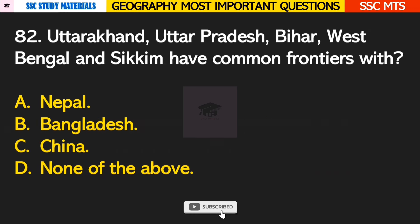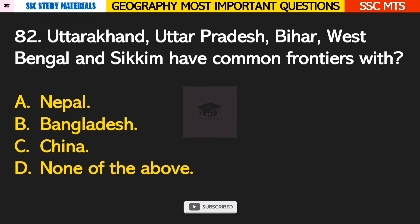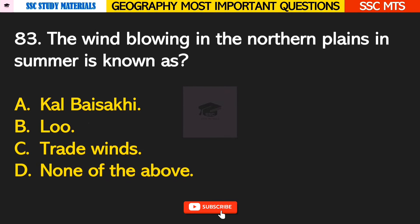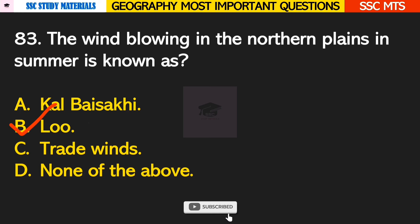Question number 82: Uttarakhand, Uttar Pradesh, Bihar, West Bengal, and Sikkim have common frontiers with? Answer A — Nepal. Question number 83: the wind blowing in the northern plains in summer is known as? Answer B — it is known as Loo.